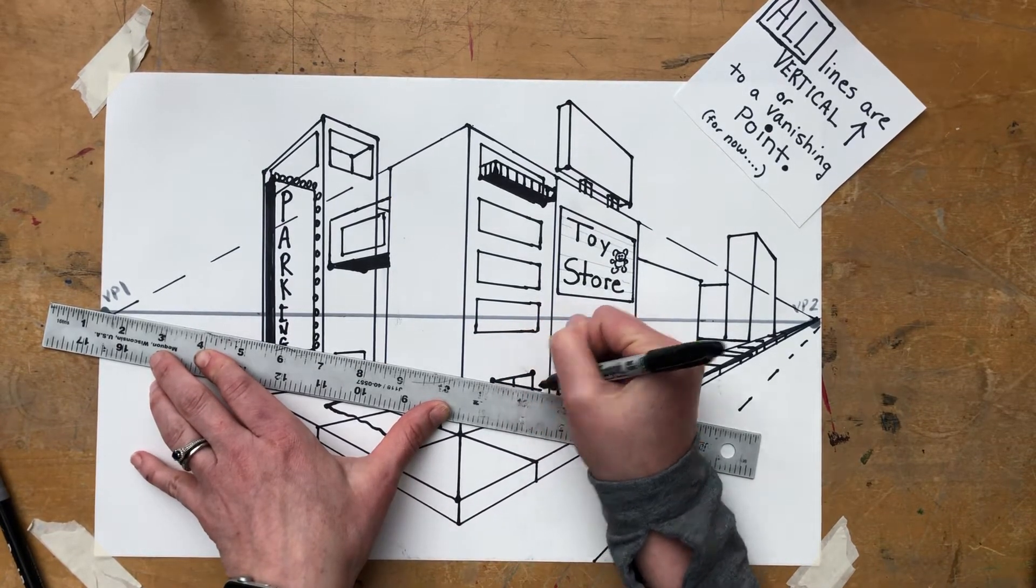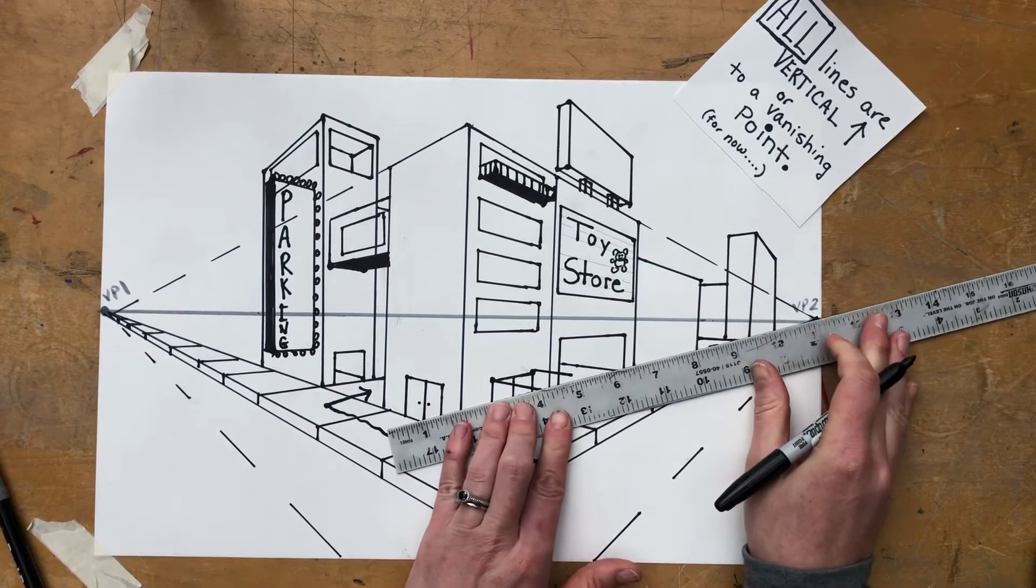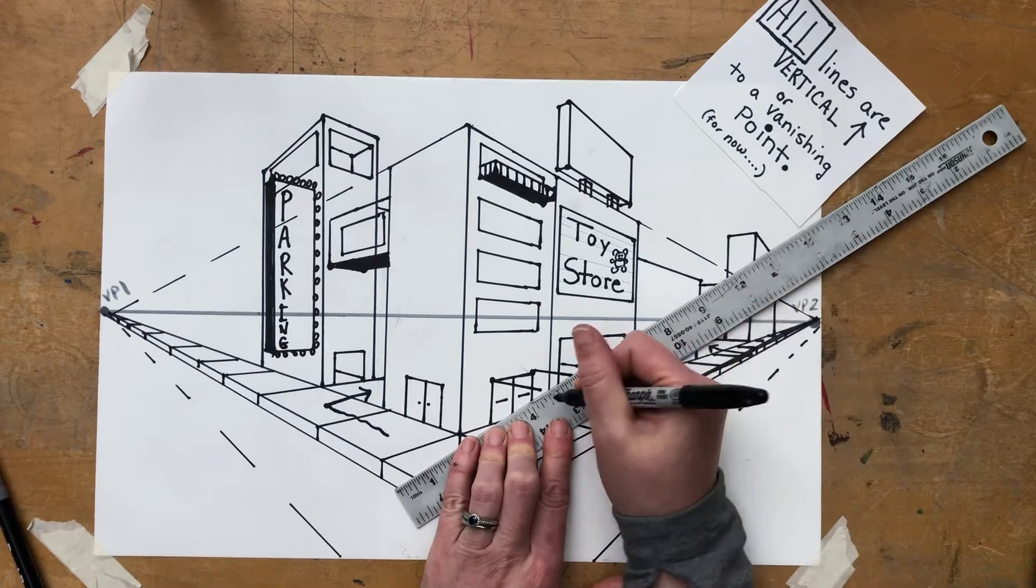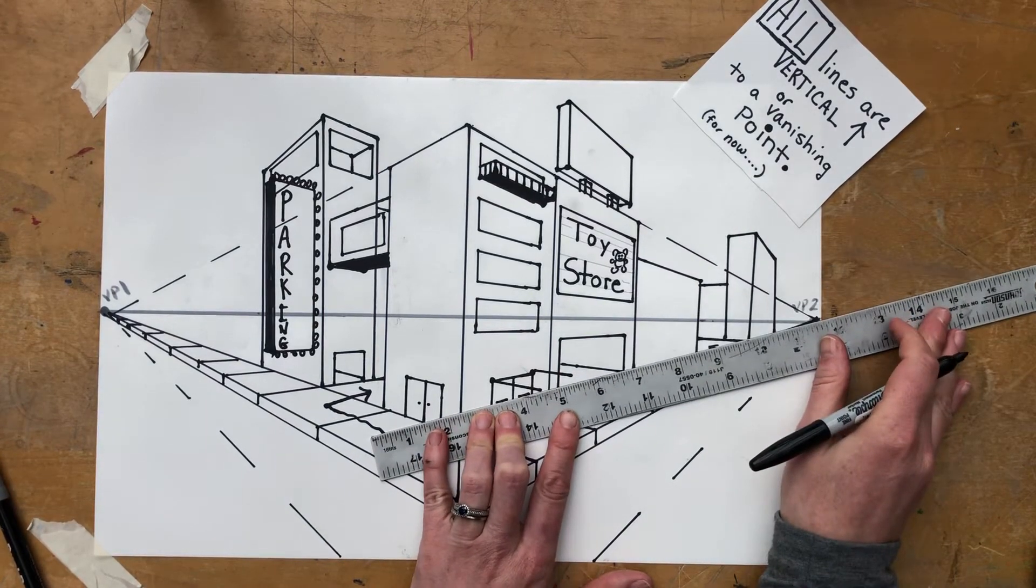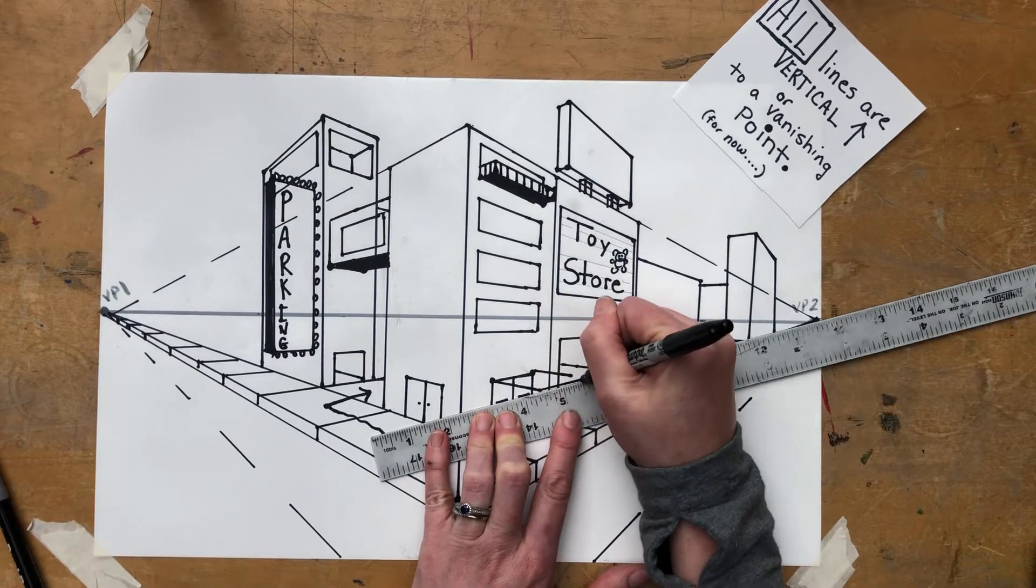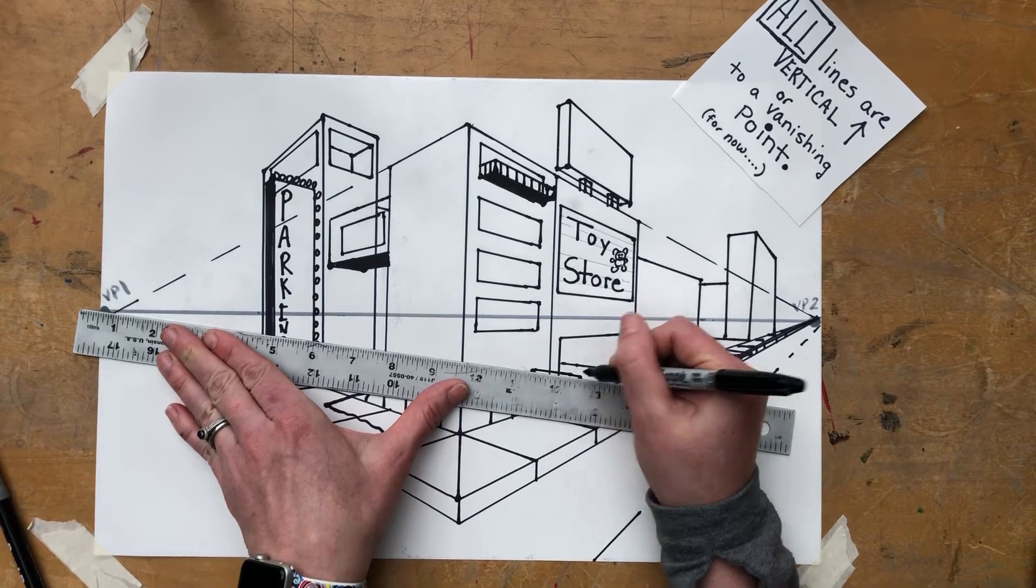I'm going to the opposite vanishing point here from those two dots, connecting them. If it doesn't go to a vanishing point, look at my ruler's not going to VP2. Make sure you line it up to the vanishing point and then adjust your other line to connect it to keep it correct and accurate.